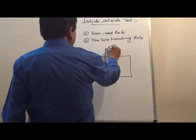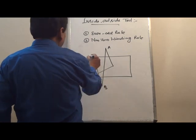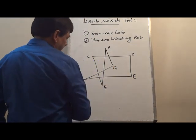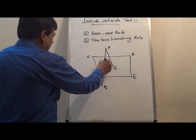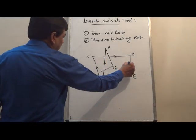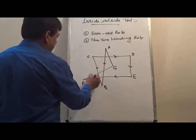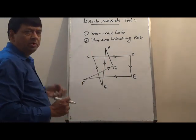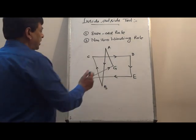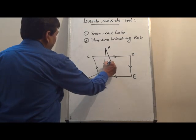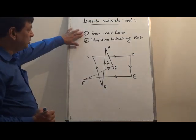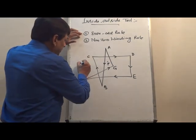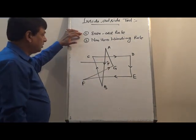Now I take a polygon. This point is A, this point is B, C, D, E, F, and G. Now setting the direction. Now I'm taking the Even-Odd Rule. Suppose I take a point P — I have to check by this rule whether this point is inside the polygon or outside the polygon. Just draw the scan line.